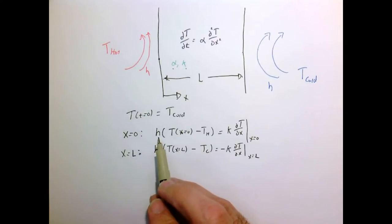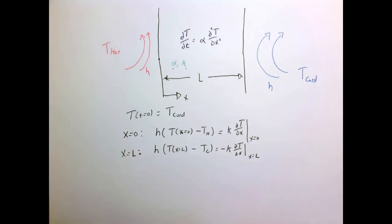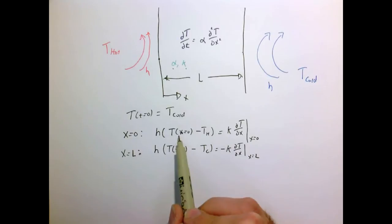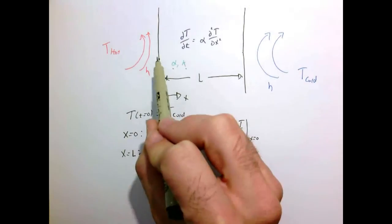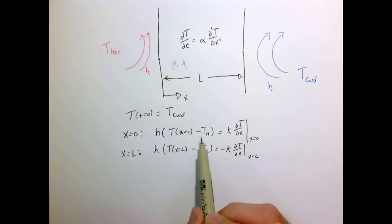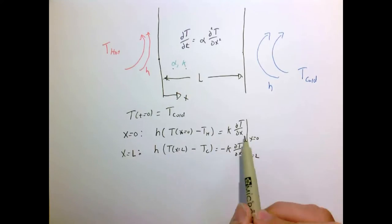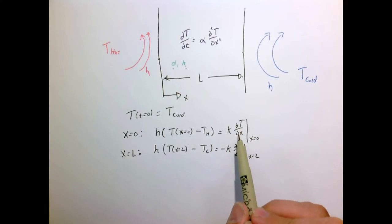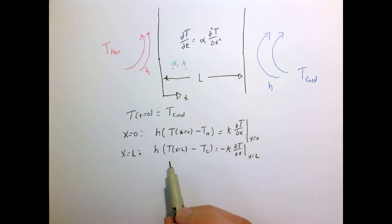The heat flux by convection has to equal the heat flux by conduction at X equals zero and at X equals L. We need to be careful about the sign. At X equals zero, we expect the wall temperature to be a little colder than T-hot, so that term is negative, meaning the temperature gradient should be negative — falling from hot to cold. That looks correct.